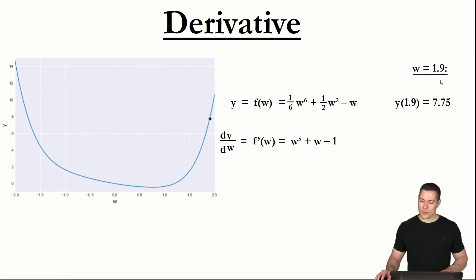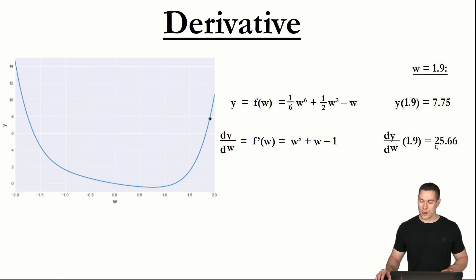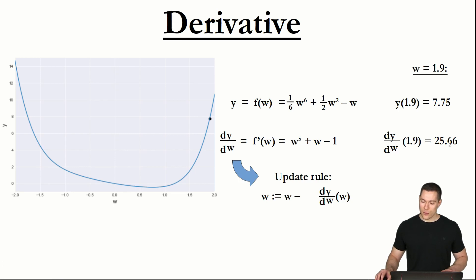For that adjustment of w, we can take advantage of the fact that the derivative at that point tells us how our y changes if we slightly increase w. So when w is 1.9, if we increase it by a tiny amount, then y would change by 25.66 times that amount. So if we instead decrease our w by the value of the derivative at this point, then our y should get smaller and we should get closer to the minimum.